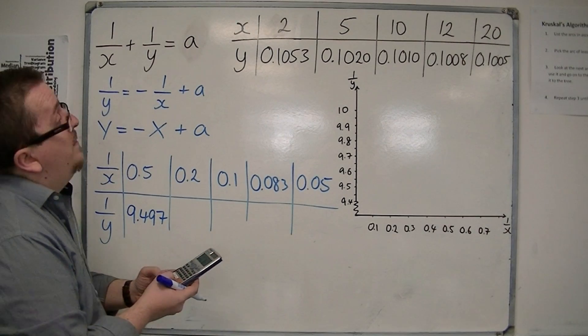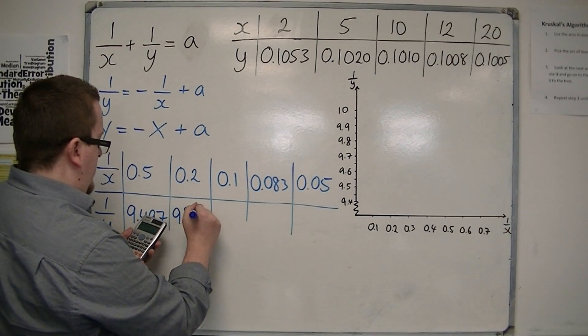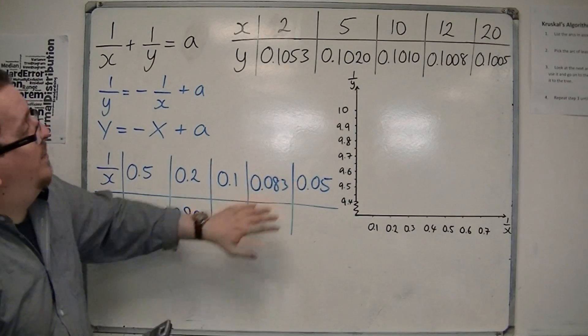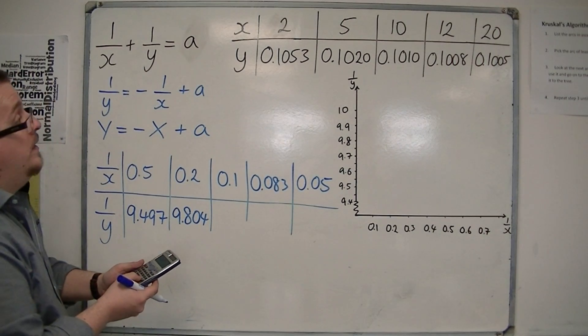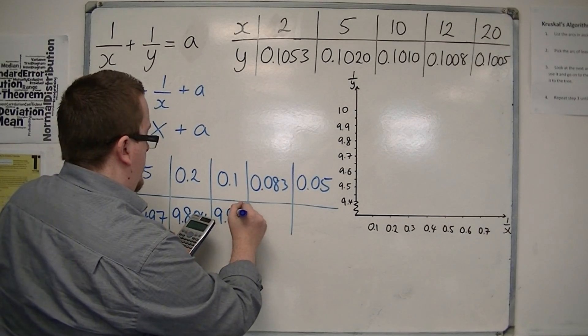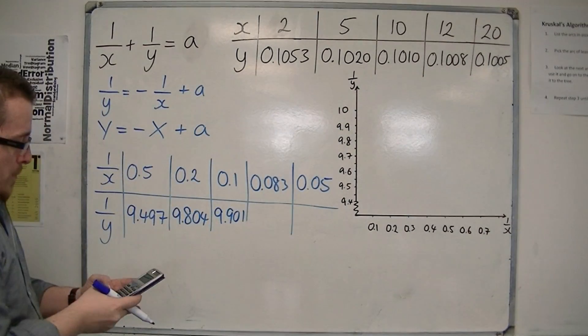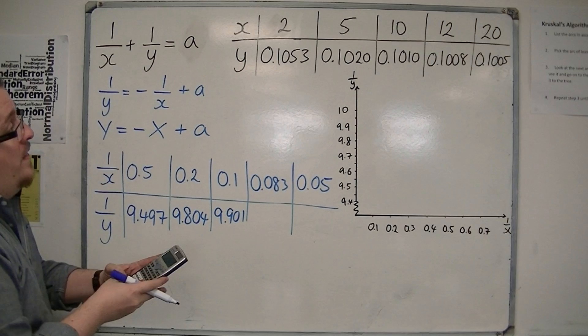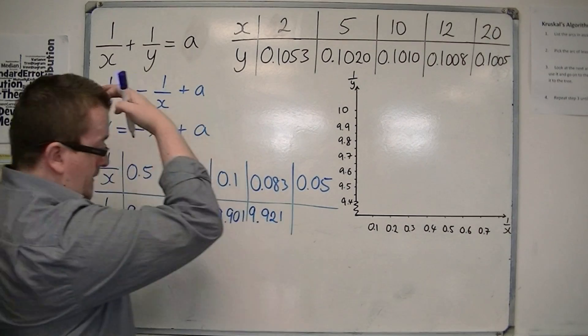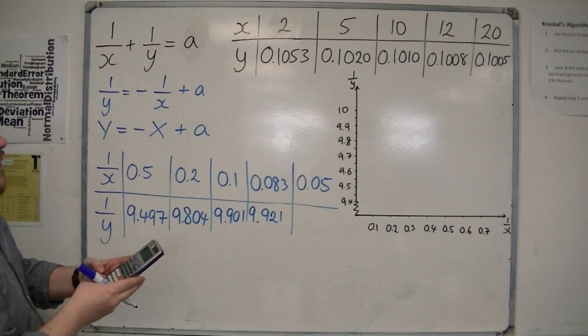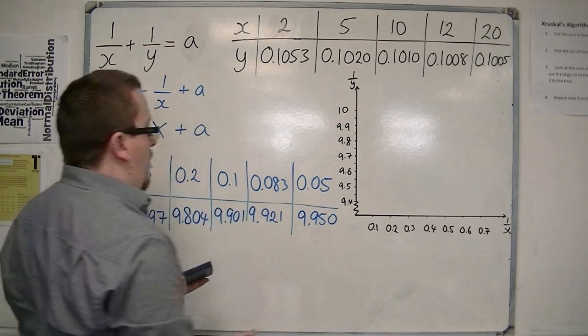And then I've got 1 divided by 0.1020, which is 9.804 to three decimal places. Then 1 divided by 0.1010, which is 9.901, so three decimal places. Then I've got this 0.1008, so 1 divided by that is 9.921, and then 1 divided by 0.1005 is 9.950.